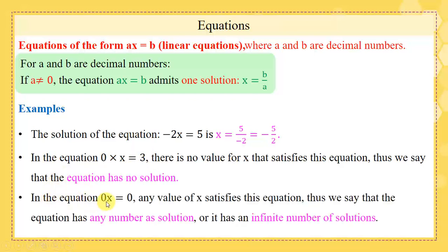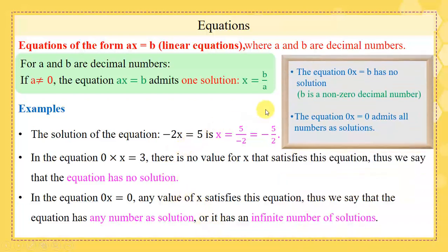In the equation 0x equals 0, here we have a — the coefficient of x — equal to 0, and b — the number on the right side — also equal to 0. We say that any value of x satisfies this equation. Thus we say the equation has any number as a solution, or it has an infinite number of solutions. In conclusion: 0x equals b has no solution when b is non-zero; when 0x equals 0, all numbers are solutions.